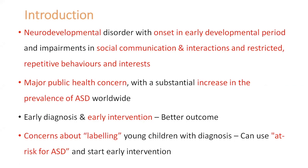Over the years, the prevalence of ASD has significantly gone up. What we do know is that there are no medical treatments available for this condition, but early diagnosis and early intervention leads to better outcomes. Many parents are concerned about the label of ASD. So for children who are quite young, whom we're not very sure or confident about the diagnosis, we could just say that they are at risk for Autism Spectrum Disorder and start intervention as early as possible.